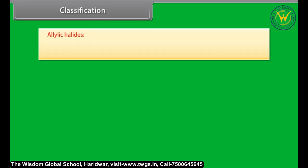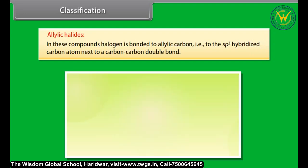In allylic halides, the halogen is bonded to an sp3 hybridized carbon atom adjacent to a carbon–carbon double bond.